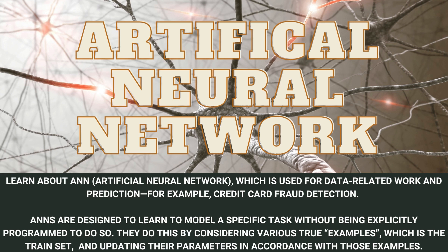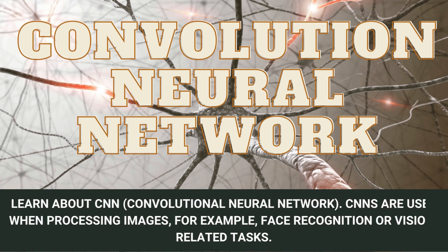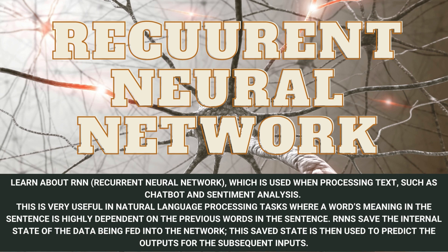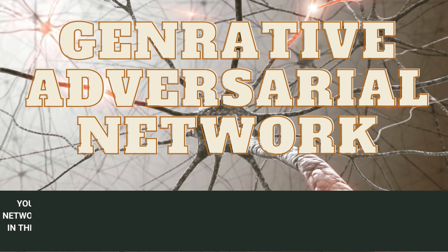Learn about CNN — Convolutional Neural Networks — which are used when processing images, for example face recognition or vision-related tasks. Learn about RNN — Recurrent Neural Networks — which are used when processing text, such as chatbots and sentiment analysis. This is very useful in natural language processing tasks, where a word's meaning is highly dependent on previous words. RNNs save the internal state of data being fed into the network, which is then used to predict outputs for subsequent inputs.